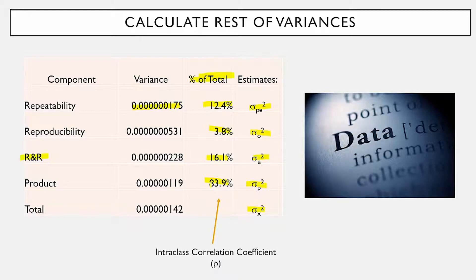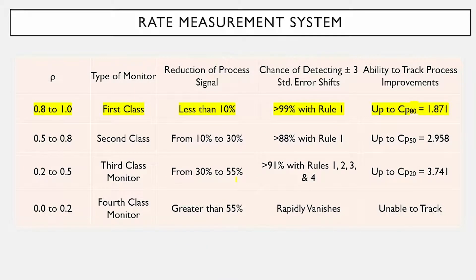This product variance value is called the intraclass correlation coefficient, or rho. This is the value that Dr. Wheeler used to develop his classification system for measurement systems. You take your value of rho — ours was about 0.84 — so it's between 0.8 and 1, making it a first class monitor. He rated these by discussing three different processes: the reduction of process signal, what's the chance of detecting a plus or minus 0.3 standard error shift, and what's the ability to track future process improvements.